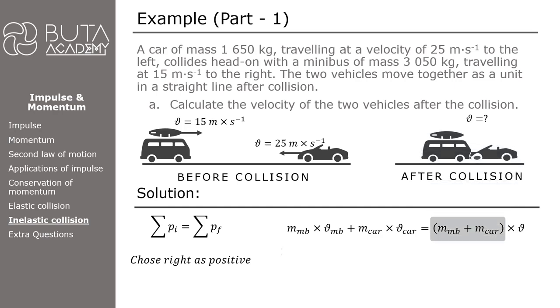Mass of the minibus is 3050 kilograms and its velocity is 15 meters per second. Mass of the car is 1650 kg and its velocity is minus 25 meters per second, as it is moving to the left. 4700 times V equals 4500. Velocity is equal to 0.96 meters per second. The minibus and car will move to the right because the answer has a positive value.